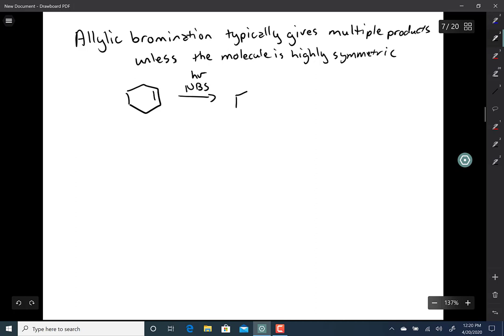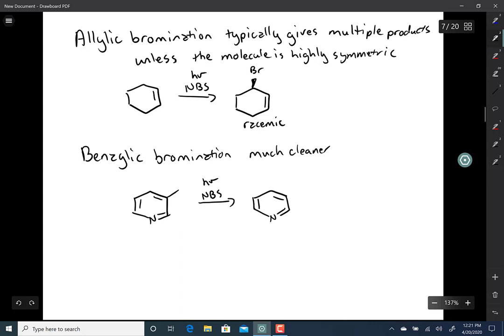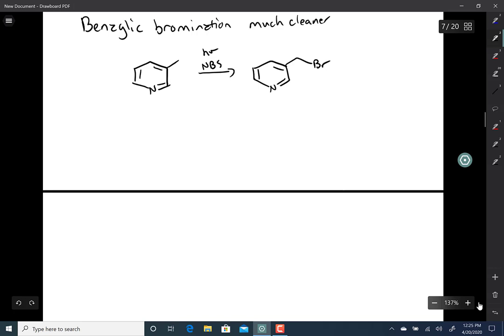So allylic bromination typically gives multiple products unless the molecule is highly symmetric. Benzylic bromination is much cleaner, and it doesn't even have to be benzene as the aromatic ring. You can also have pyridine or other aromatic rings as well.